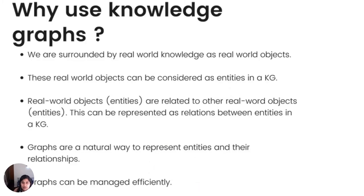Why do we use knowledge graphs? We are surrounded by real-world objects in the form of places, events, things we use in daily routine, or people we come across. These real-world objects can be considered as entities in a knowledge graph, abbreviated as KG. Entities are related to other entities in a knowledge graph through relations, and graphs are a natural way to represent these entities and their relations. Knowledge graphs can also be managed very efficiently using graph databases.